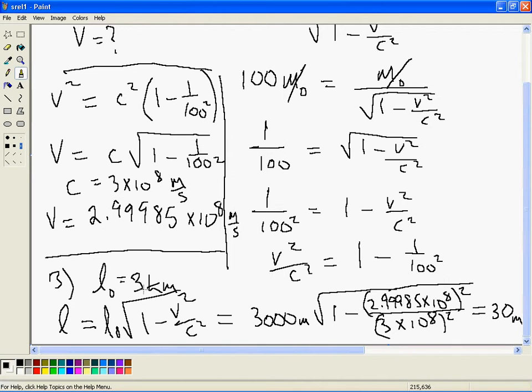So, something that is 3 kilometers long, as observed by a stationary observer in the same reference frame, turns out to be only 30 meters long, as observed by the electron's point of view.